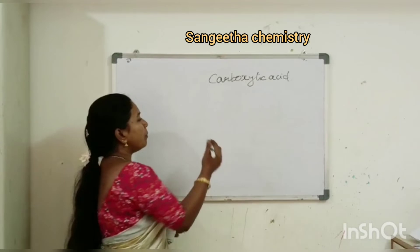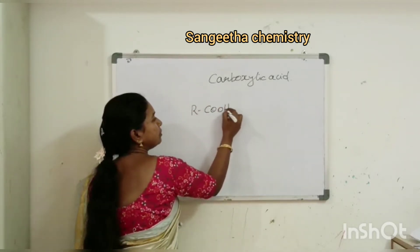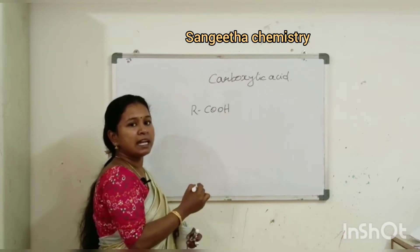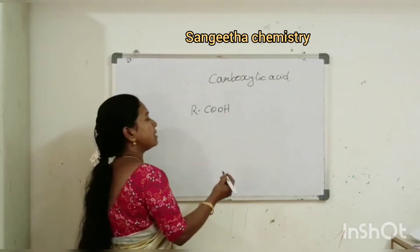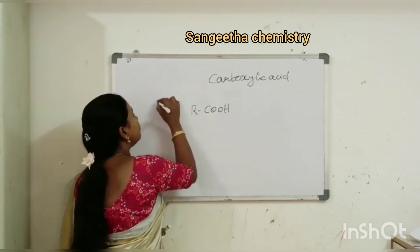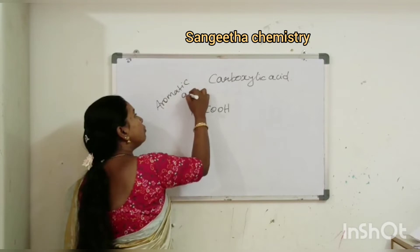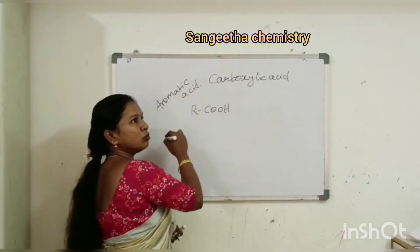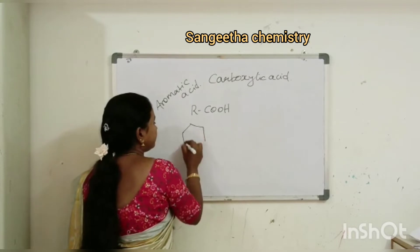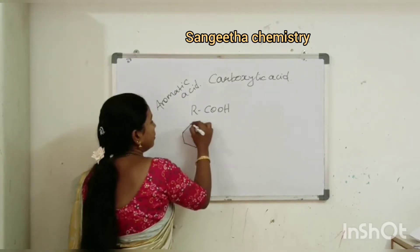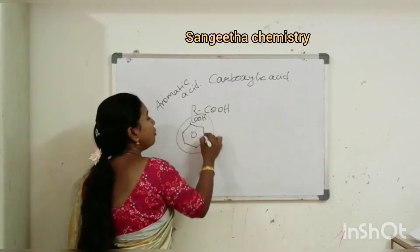The carboxylic acid functional group is R-COOH. Now we focus on aromatic acid. The benzene group attached to COOH gives us an aromatic acid.